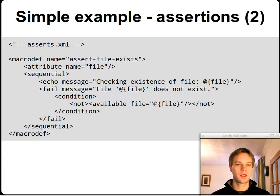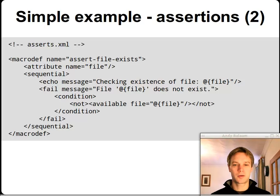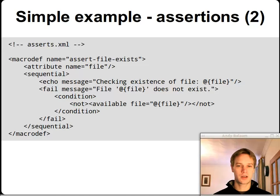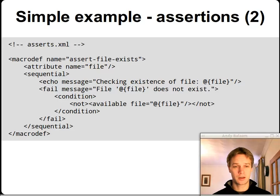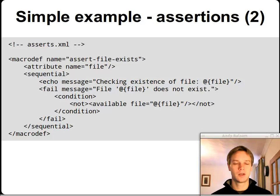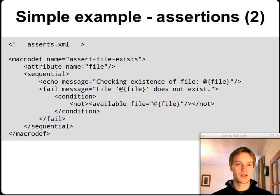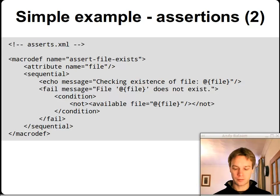The last thing missing is the assert-file-exists macro, which is also in asserts.xml. It takes one attribute called file. Inside the sequential part it has an echo saying 'checking the existence of the file', and then a fail task under certain conditions: it fails with the message 'file does not exist' under the condition that the file is not available — using the available task wrapped in not. So if the file does not exist, we fail with that message; otherwise we do nothing and the assertion succeeds.